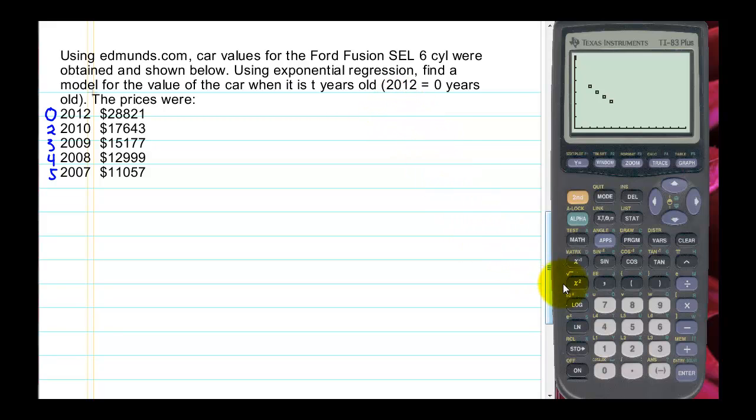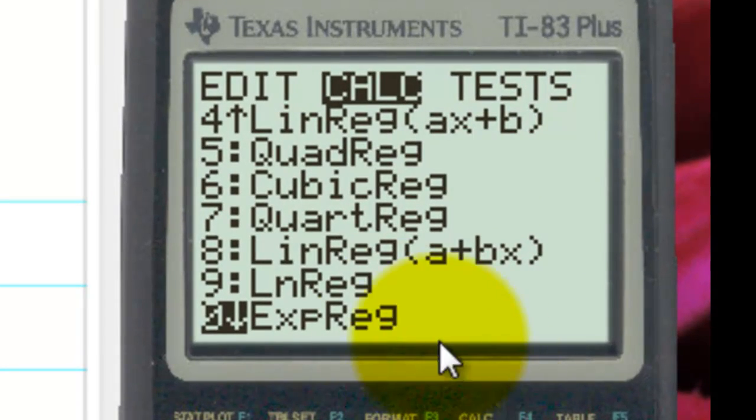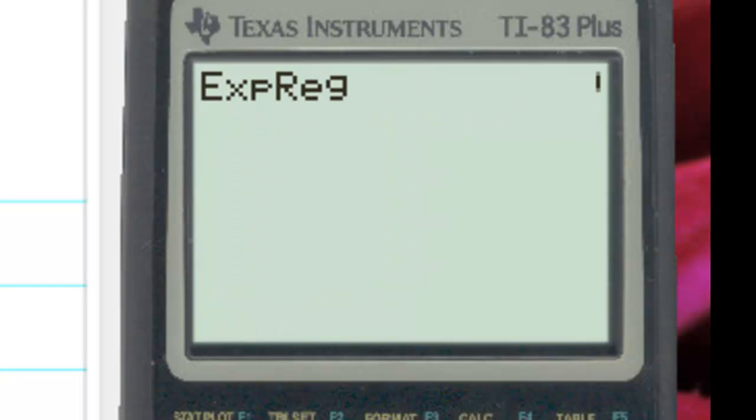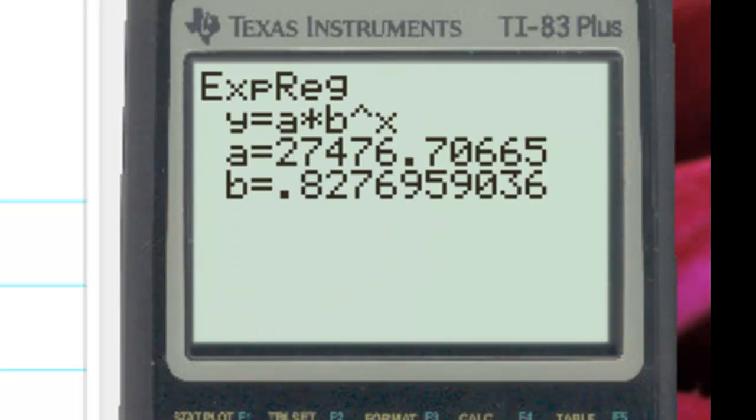To do that, our graphing calculator will do the heavy lifting for that. We press the stat function and we want to go to our calculation menu. And we have the different kinds of regression that we could do. We could try different ones to see which one fit the best. But I know that this one is an exponential model. So we're going to use exponential regression. Item 10 here, or 0. I press Enter. And it's going to give me the coefficients for the equation.